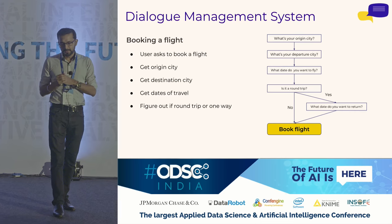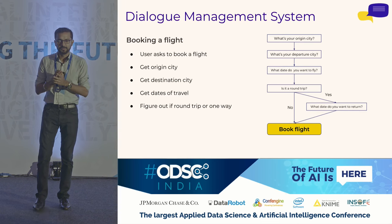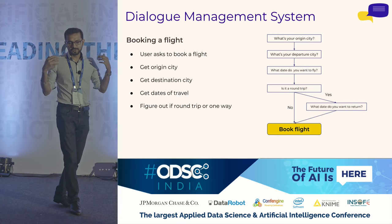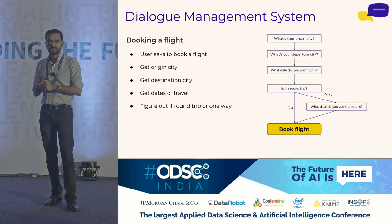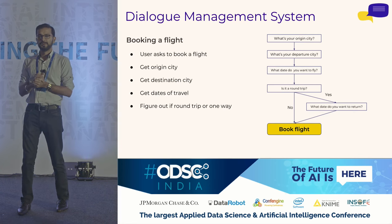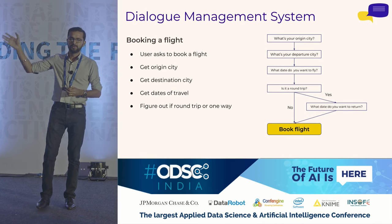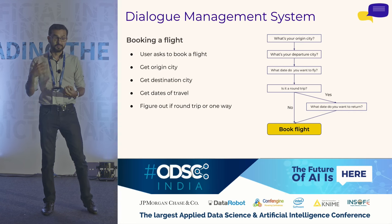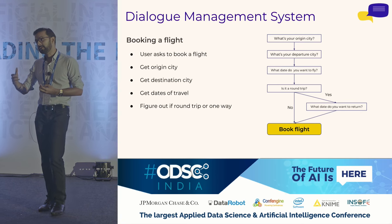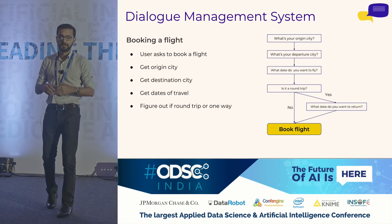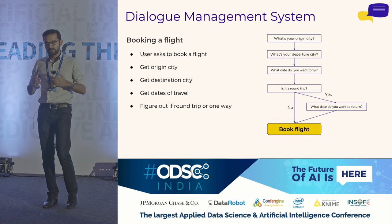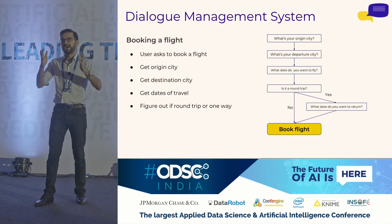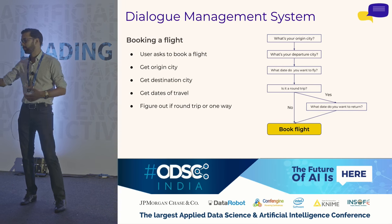Digging deeper, the dialogue management system is at the core of how you build out the retrieval model. The user asks 'I want to book a flight,' then you draw your flow chart — what's your origin city, departure city, what dates do you want to travel, is it a round trip? If it's a round trip you need the return date; if not, you proceed and book the flight. The dialogue management system helps you build out the picture you have in your mind of a conversation into how a bot can interpret it.